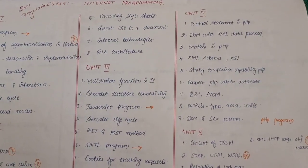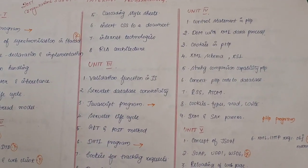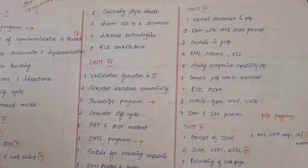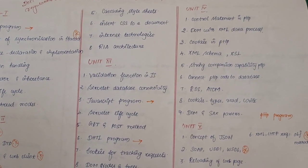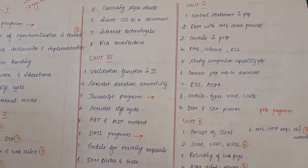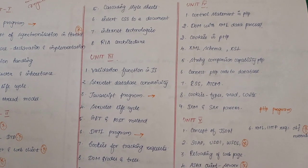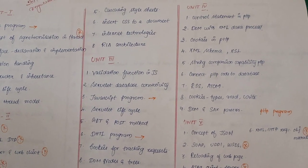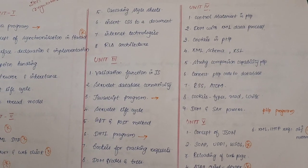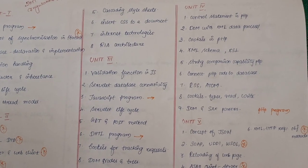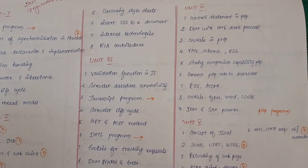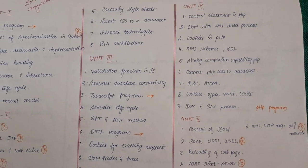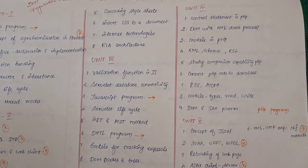Next one, Unit 4 — Control Statement in PHP, DOM with XML Data Processing, Cookies in PHP, XML Schema, XSL, String Comparison Capability, Connect PHP Code to a Database, RSS Atom, Cookies and their Types, How to Read and How to Write, DOM and SAX Parsers. Unit 4, repeated.